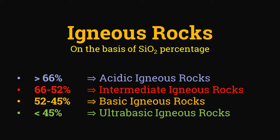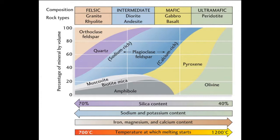The occurrence of pyroxene is dependent on the SiO2 percentage in the igneous rocks. On this basis, igneous rocks are classified as felsic or acidic when SiO2 content is greater than 66%; intermediate when SiO2 content is 52–66%; mafic or basic when the content is 45–52%; and finally ultramafic or ultrabasic when the silica content is less than 45%. As shown in this diagram, pyroxenes are mostly found in basic and ultrabasic igneous rocks like gabbro, basalt, and peridotite.